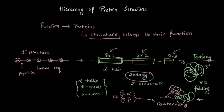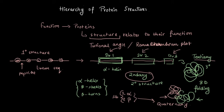That was all about the basics of the hierarchy of protein structures. Secondary structures are dictated by torsional angles and dihedral angles, and we analyze these using the Ramachandran plot, where the different allowed and disallowed structures are represented graphically. That would be a topic for another day, but this covers the basics of the hierarchy of protein structures.